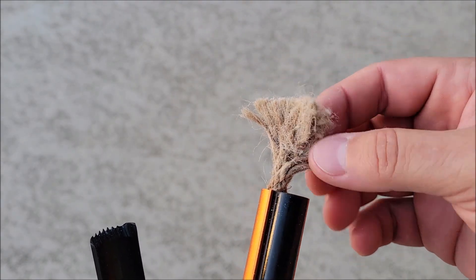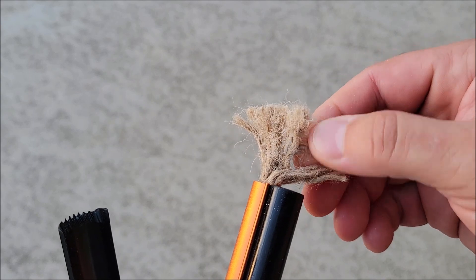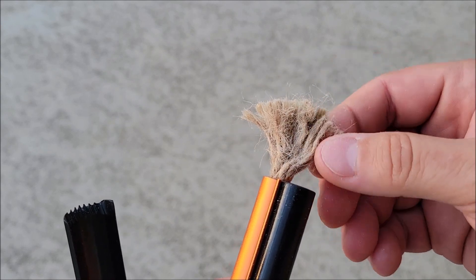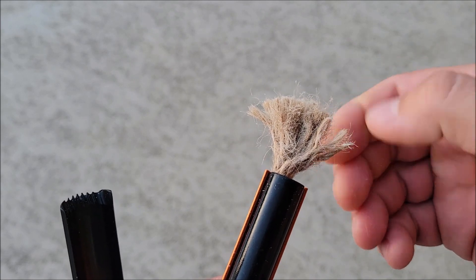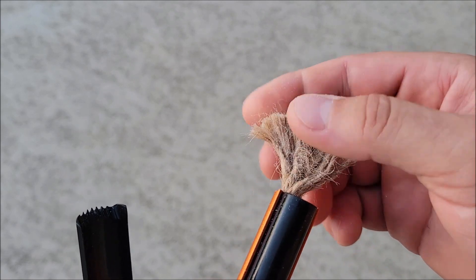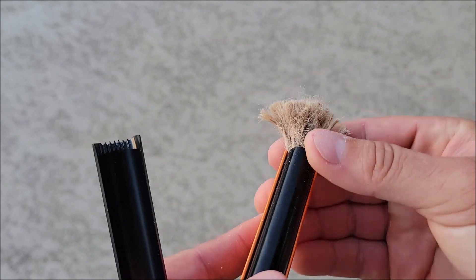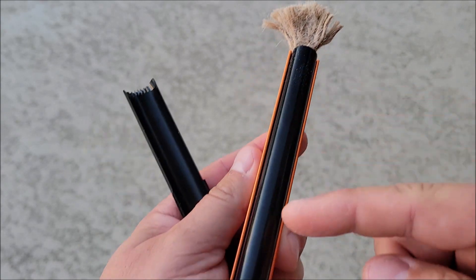I don't know if you can see very well on there but it's nice and frayed. What I did is I just used my fingers and I really just kind of twisted them back. They're all twisted rope on top of twisted rope on top of twisted rope. So if you just kind of untwist them and fluff them up like this, you should be good.